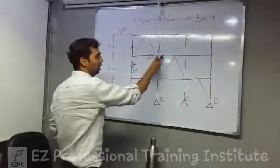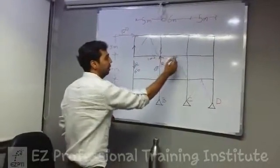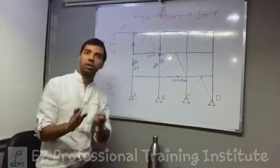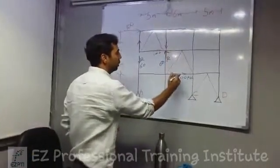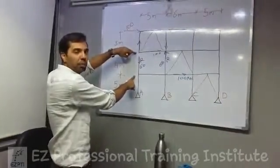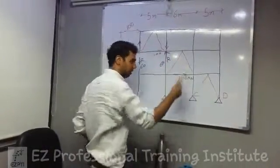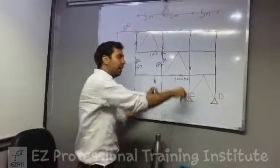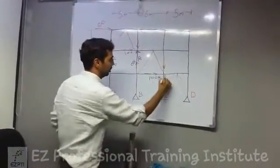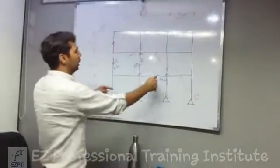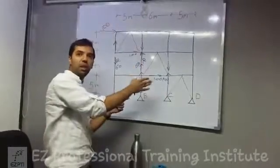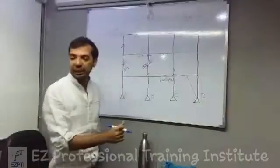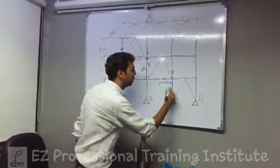Now further this load travels here. And after travelling when it comes to here it gets lowered down. Again same value 100, because the horizontal force is not getting changed. How this will be transferred to here? So again the next moment is 100 into 4. This is 400 kN meter moment which is in this direction. And now again the resistance will be given by the reactions. And what will be the value for this? So this will be 100 into 4, that means 400 kN meter moment divided by 6. So 400 by 6 will be the answer. That means 66.7 will be the answer.